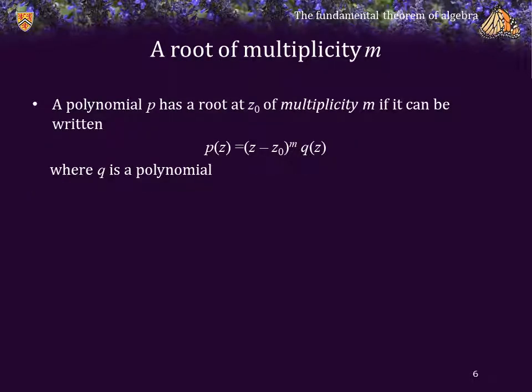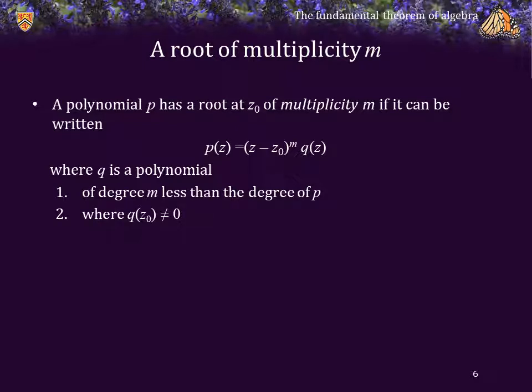We will now introduce the following definition. A polynomial P has a root at z0 of multiplicity m if that polynomial can be written in the form z minus z0 raised to the power m times q of z, where q is a polynomial with degree m less than the degree of P and where q at z0 is not equal to 0 — that is, q does not have a root at z0.